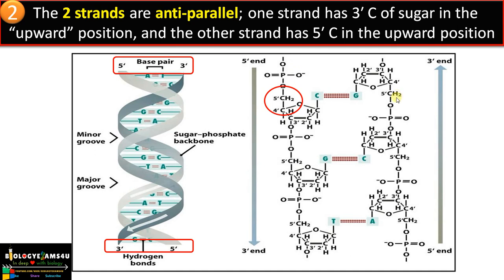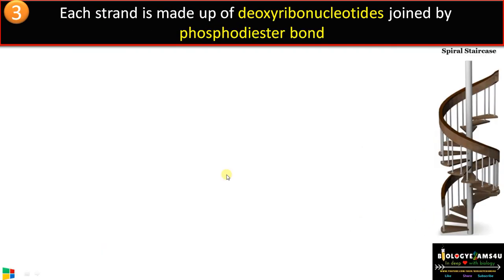In the second strand, the third carbon position at the upper region is the 3' OH end. At the bottom end it is the 3' OH (third carbon position orienting downwards), whereas in the second strand it is the 5' phosphate end. This makes the strands anti-parallel — one runs 5' to 3', the other runs 3' to 5'.